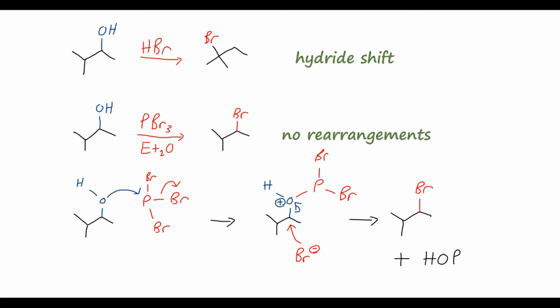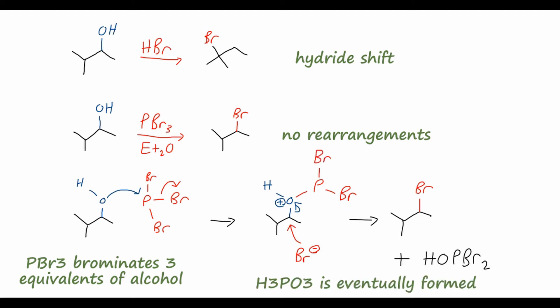And also with this HOPBr2 species. And what's good about this reaction is that that species, because it has two additional bromines, can go react with two more molecules of alcohol to form a total of three equivalents of alkyl bromide. And then finally, we end up with phosphorous acid as our byproduct. So that's our bromination reaction.